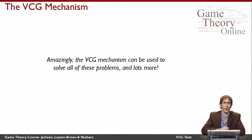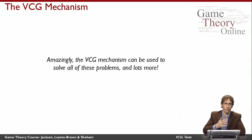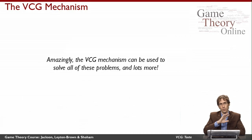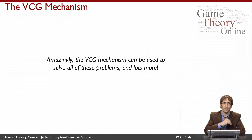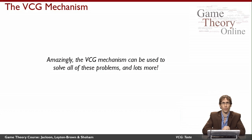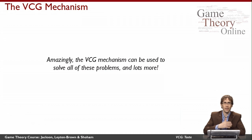So overall, the VCG mechanism is an amazing way of solving all of these apparently very different problems and indeed many more. The key property it has is that it chooses the efficient, social welfare maximizing outcome in a transferable utility setting in a way that gives agents dominant strategies to tell the truth. We'll spend the rest of this week telling you in more formal detail how the VCG mechanism is defined, how it works, and what its strengths and weaknesses are.